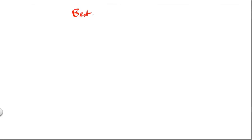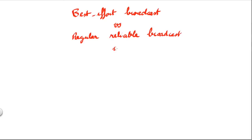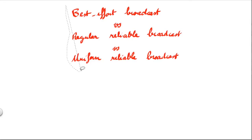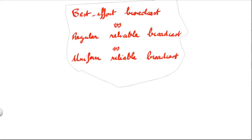In this course, we will study the difference between three different broadcasting algorithms. One is best effort broadcast, the second one is regular reliable broadcast, and the third one is uniform reliable broadcast. These three abstractions look very similar, but they are indeed very different, and they actually provide very different guarantees to the application. I will explain what those differences are and in which case we want to use which kind of broadcasting algorithm.